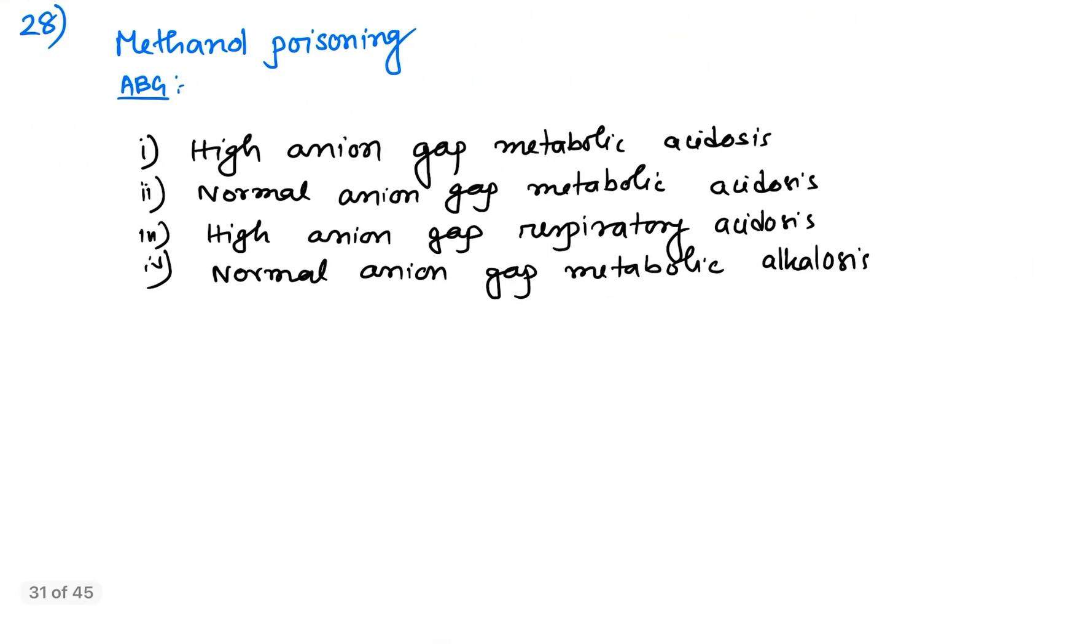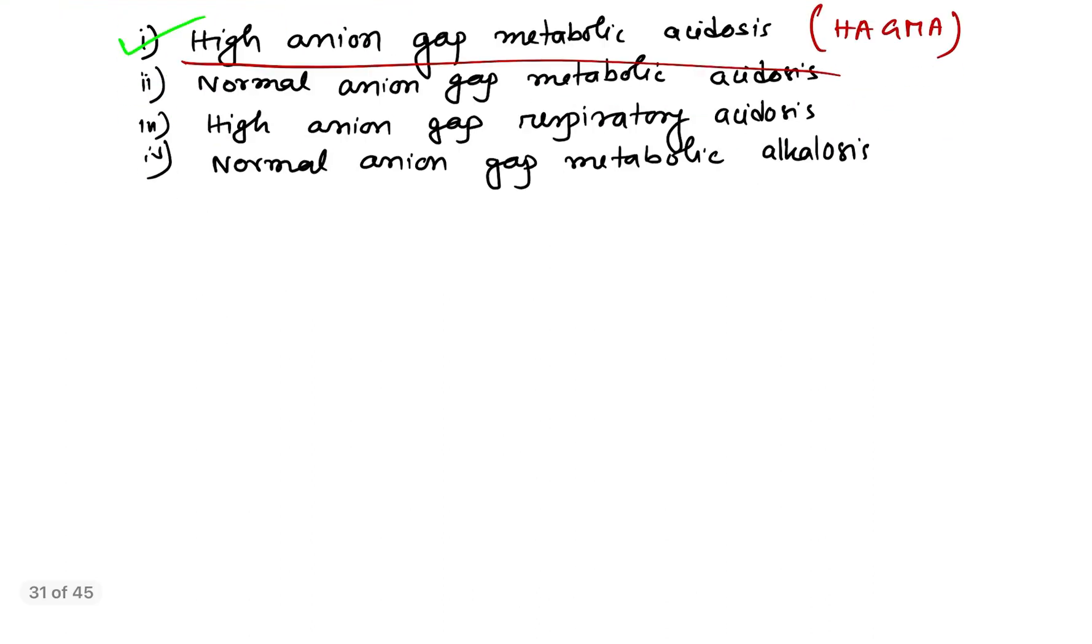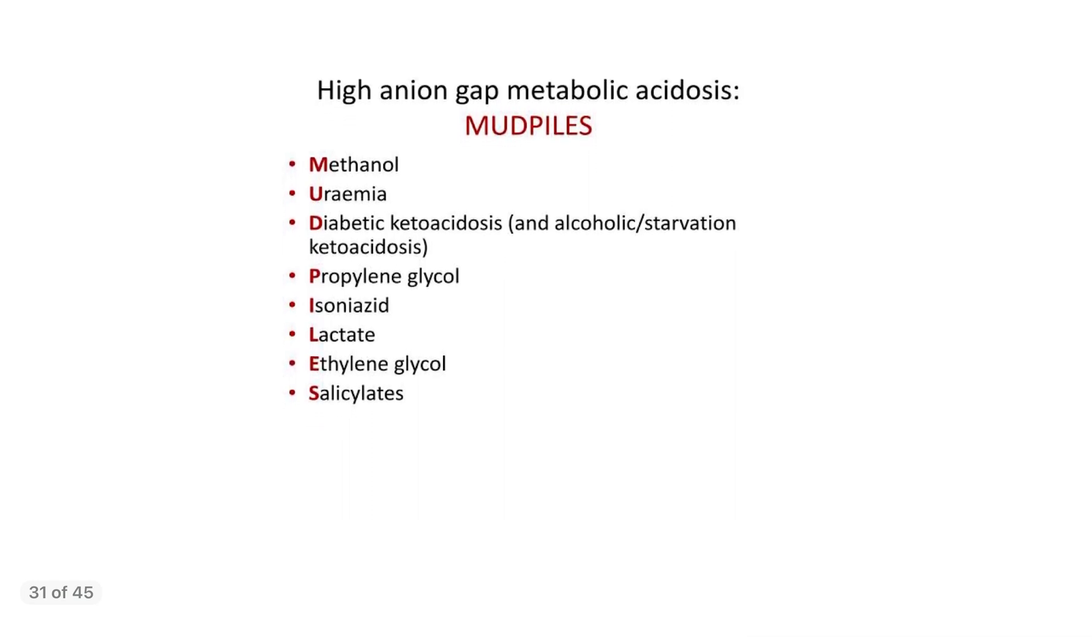Next, question number 28. Methanol poisoning causes which metabolic abnormality you can find in case of methanol poisoning? That is nothing but HAGMA or high anion gap metabolic acidosis. So this is the answer. As all of you know, the popular mnemonic for high anion gap metabolic acidosis, that is mud piles.